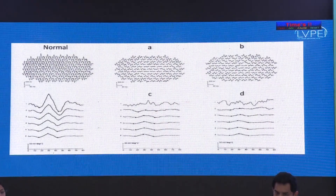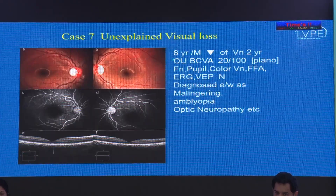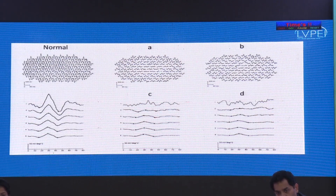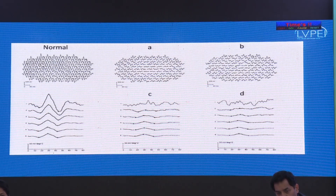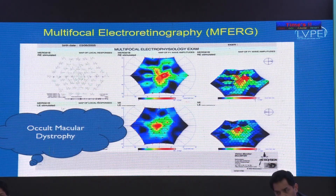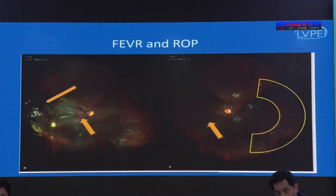One more case: a patient referred for unexplained vision loss, previously diagnosed elsewhere as malingering. Visual acuity was 20/100, and the fovea appeared normal with OCT looking quite normal. The clinching point was the multifocal ERG — central waveforms were all attenuated. This patient actually had occult macular dystrophy. By routine examination alone, and even by OCT in early stages, this may be missed. Multifocal ERG is essential — do not dismiss these patients as malingering; obtain a multifocal ERG.